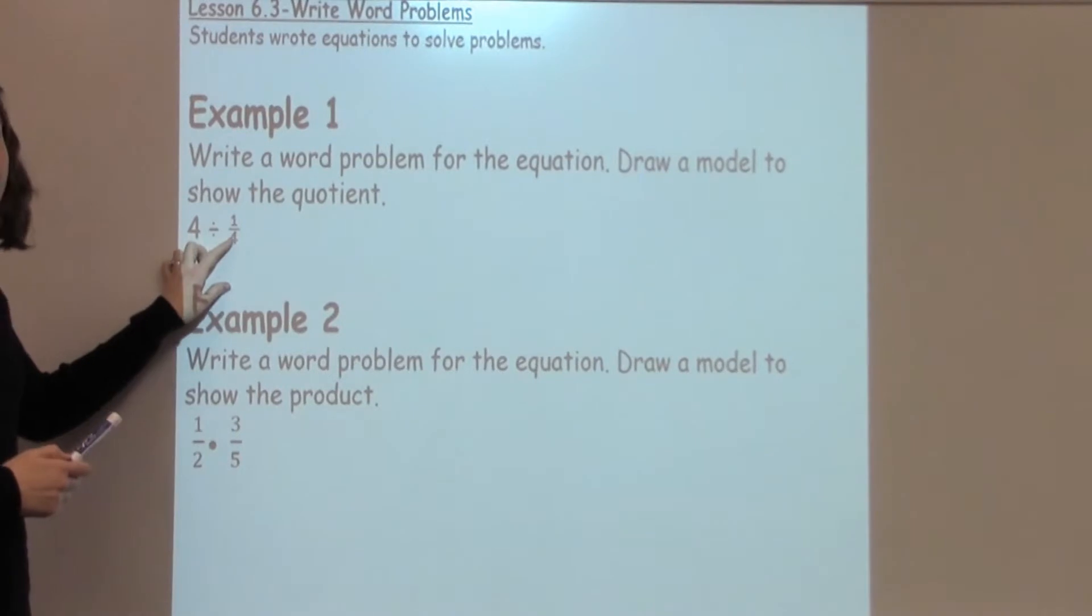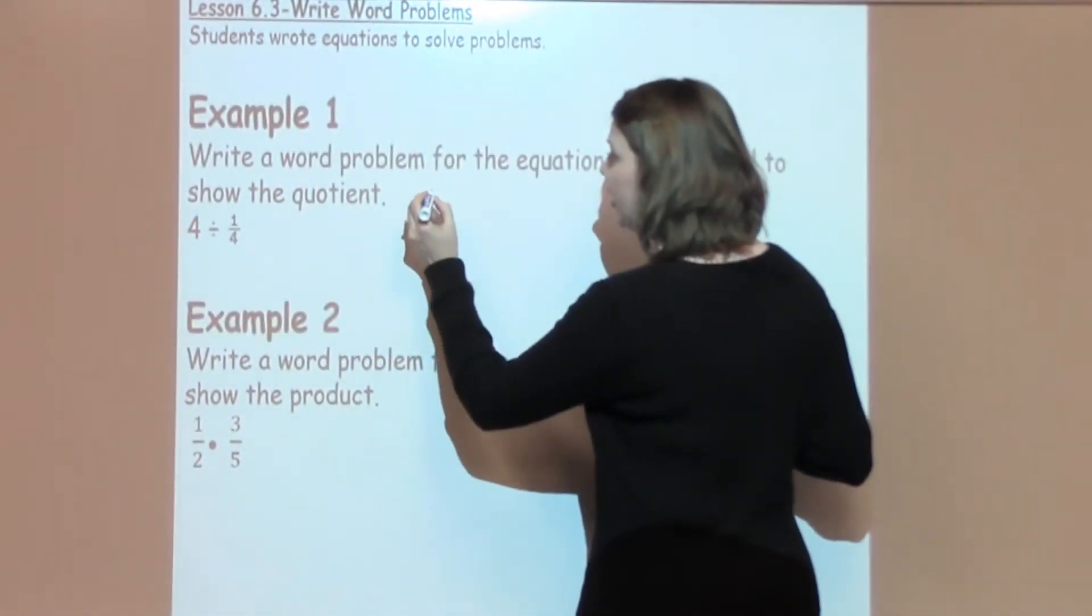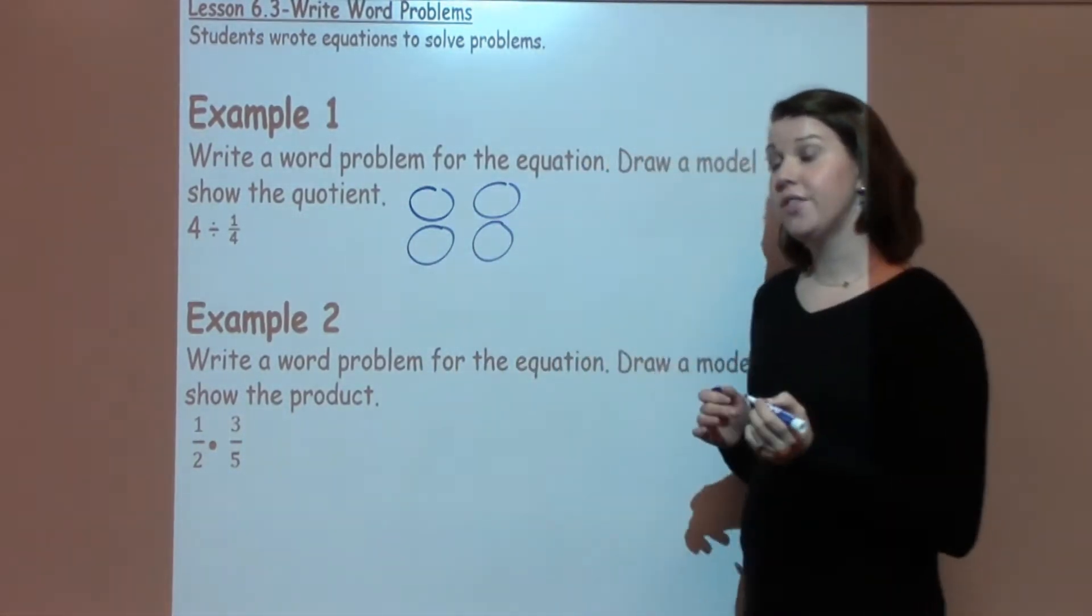So I've got 4 divided by 1 fourth. I need 4 of something, so I'm just going to draw 4 cookies. Here are my 4 cookies. And I need to divide them into fourths.